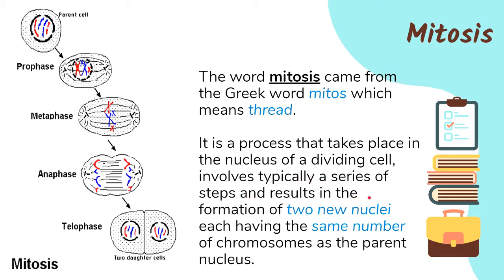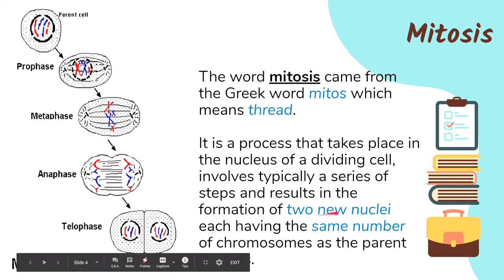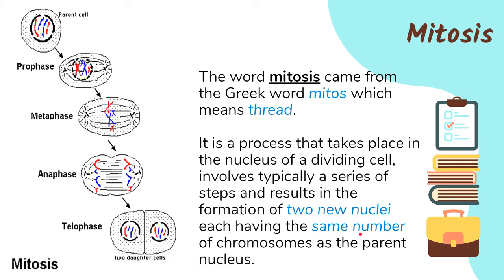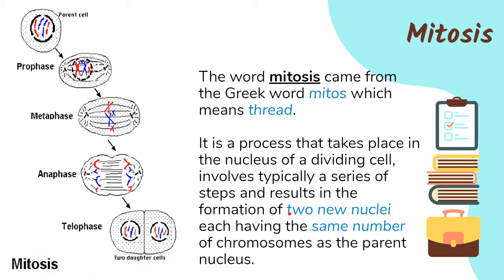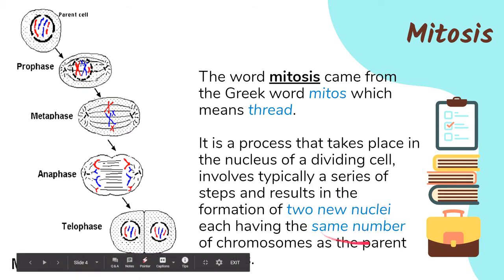The product of mitosis is two new nuclei — that's the plural of nucleus — each having the same number of chromosomes as the parent nucleus. This is where mitosis differs from meiosis. In mitosis the product is two new nuclei with the same number as the parent chromosome, while in meiosis the product is four new nuclei with half the number of chromosomes from the parent cell.